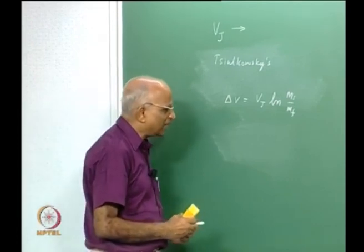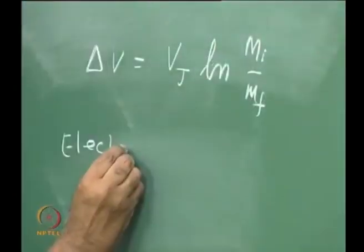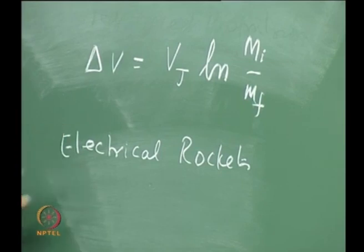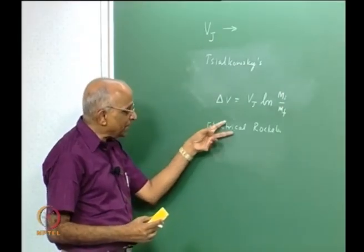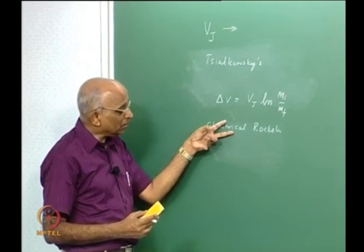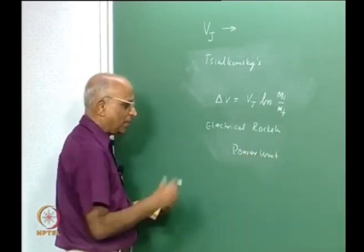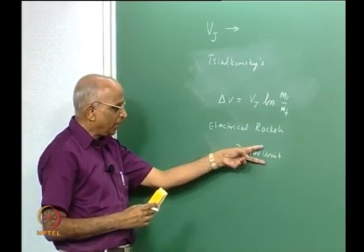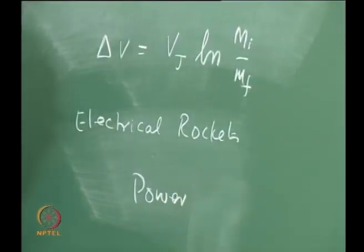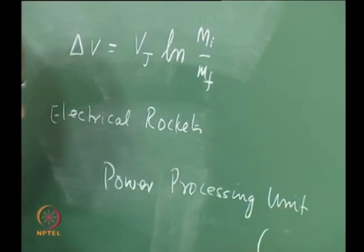Let us take a realistic picture of electrical rockets discussed in the last class. We need propellant — say xenon — and an electrical field. For an ion rocket, a voltage of about 1.5 kV is needed; for a Hall thruster, about 30 kV. That means I need a power unit. Even if I have solar power converted to electricity in my spacecraft, I still have to recondition the power to give high voltage. This is called a Power Processing Unit, or PPU.